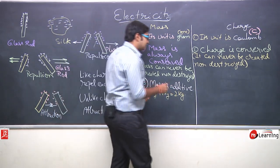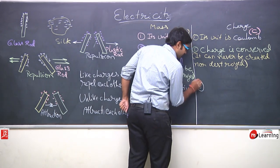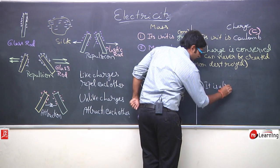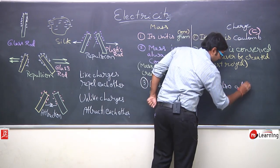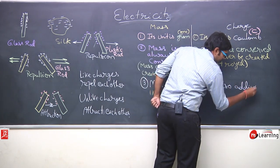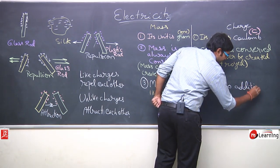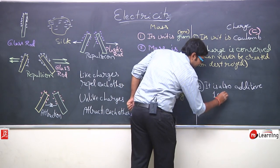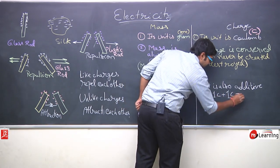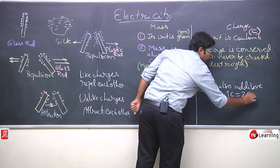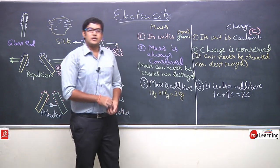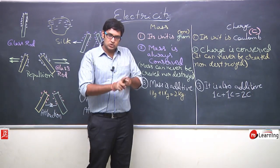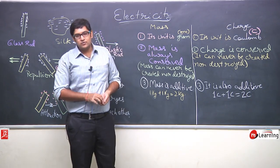Similarly, charge is also additive. 1 coulomb of charge plus 1 coulomb of charge gives you 2 coulombs of charge. We will discuss what 1 coulomb of charge actually means.